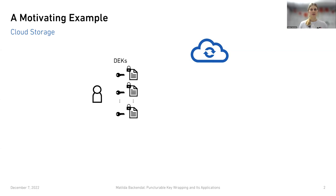Now you can safely outsource the storage of the files in the cloud. However, you're left with a bit of a key management problem because you have to store all of the data encryption keys in some protected storage. To get around this, you can generate what's known as a key encryption key, or KEK for short, and use this to wrap up, or essentially encrypt, the data encryption keys. Now the data encryption keys are also protected, and you can safely outsource the storage of both the data encryption keys and the encrypted files to the cloud.